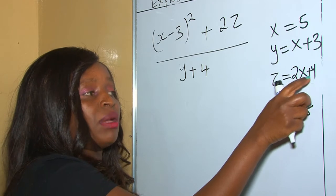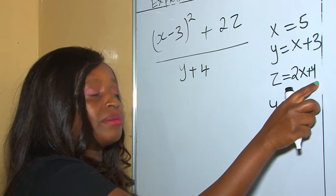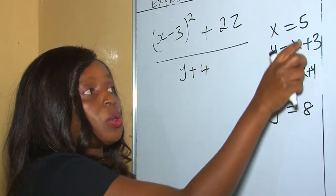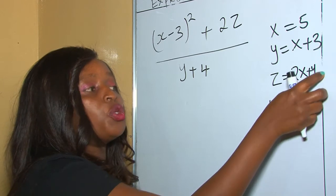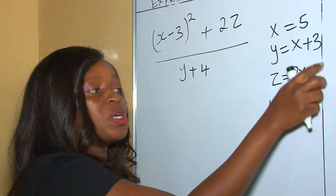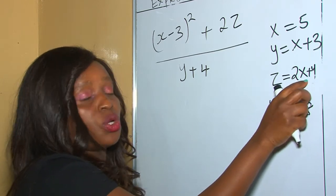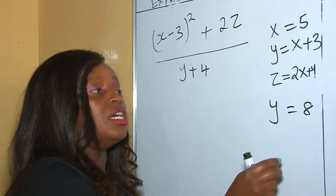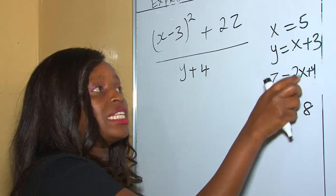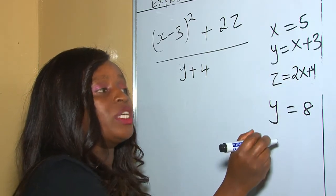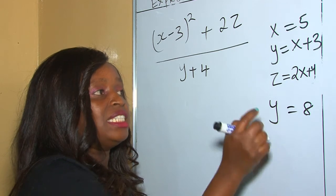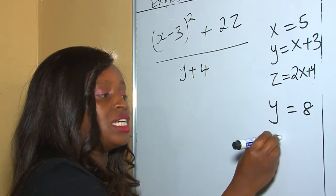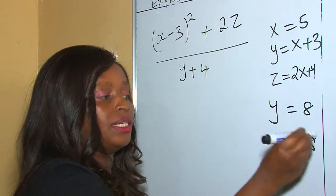Now let's get the value of z. z equals 2x plus y. We already know x is 5 and y is 8. So 2x is 2 times 5, which is 10. Then 10 plus 8 is 18. Therefore z is 18.